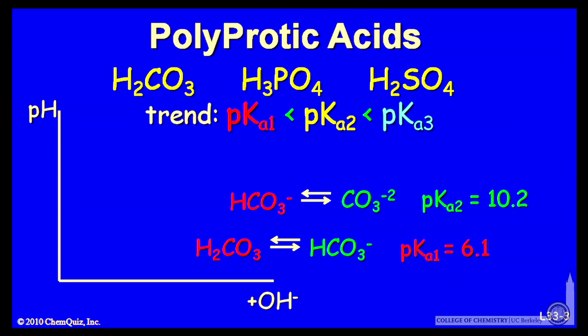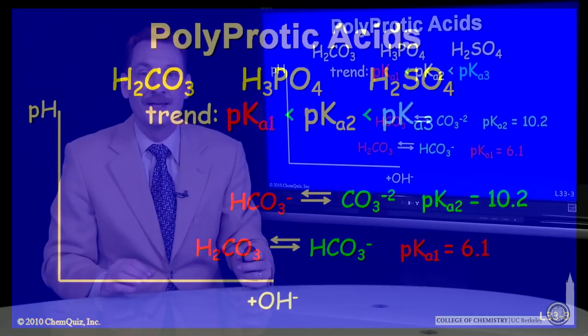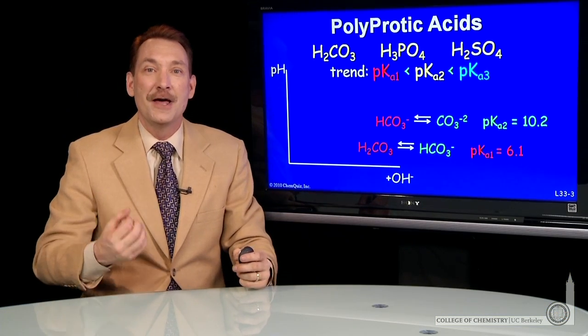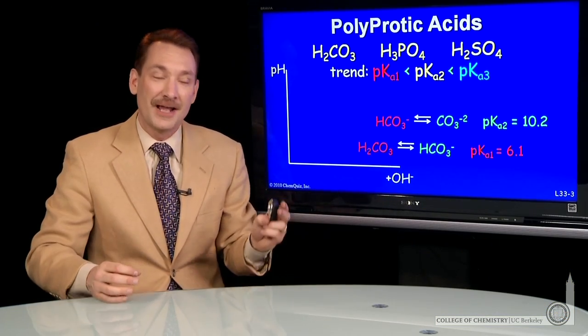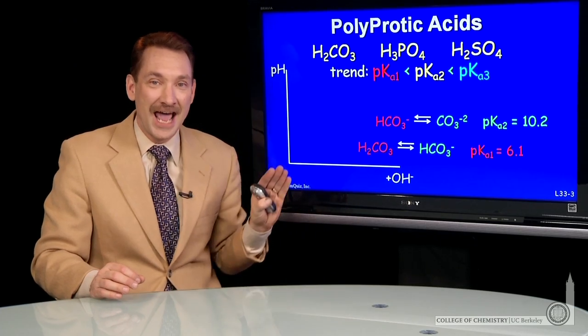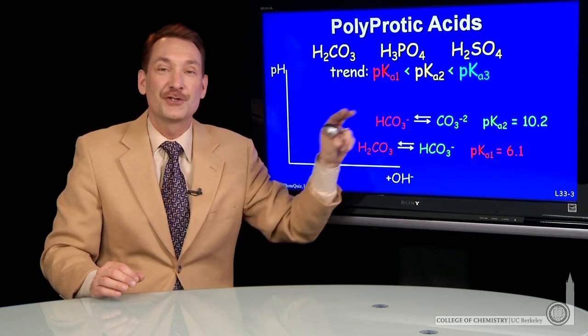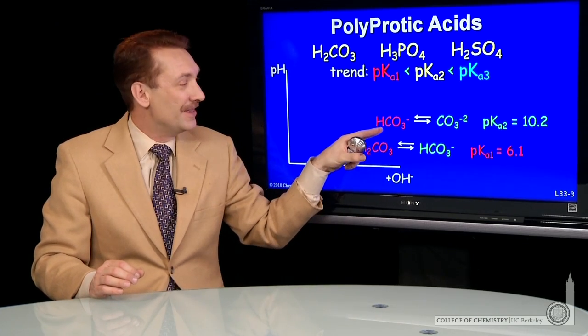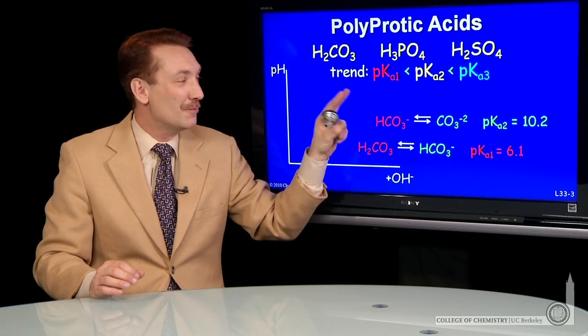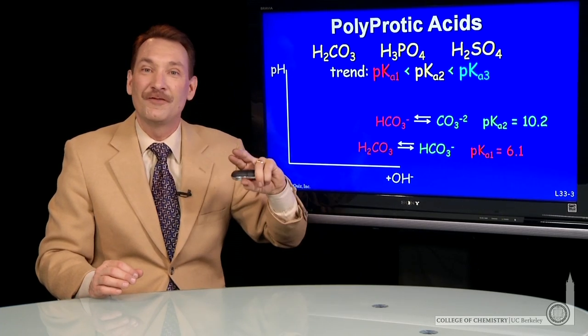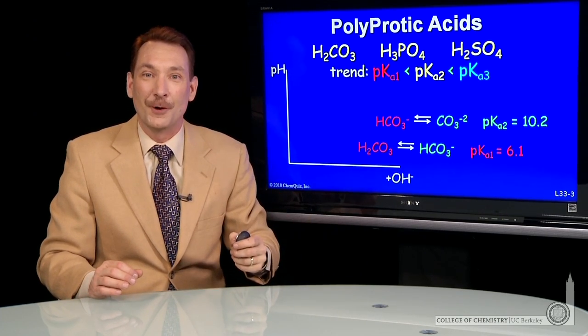The next proton, that is this one, this is the same species, of course. This proton comes off at around pH 10, because the pKa2 is around 10. And notice I use the terminology, the proton comes off. I'm talking about during a titration. As the pH passes through 10, this proton is removed, and this form without the proton becomes the favored form.